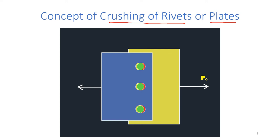Suppose the rivets are of poor material. We apply a tensile load on the two plates — a separating force — and Pc is the crushing resistance measured per unit pitch. The upper plate moves slightly to the left, and in the process it crushes the rivets, as shown by the red surface, indicating the rivet got crushed due to the movement of the upper plate.